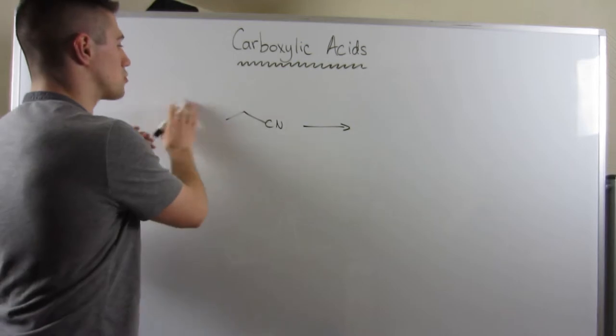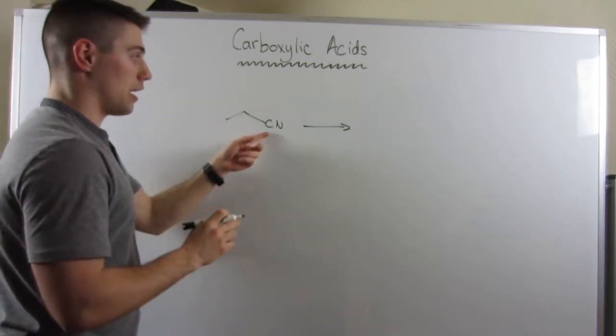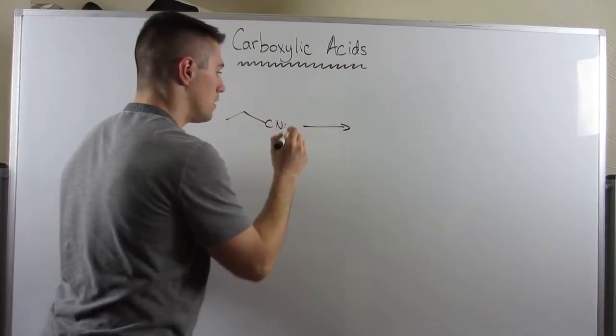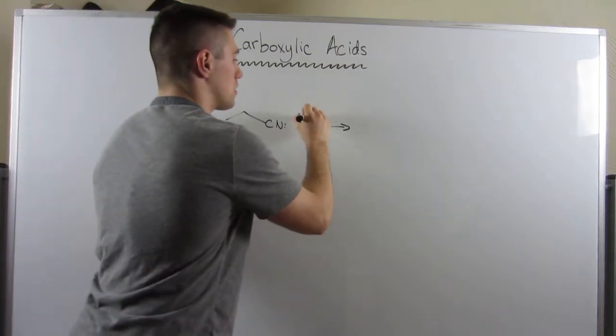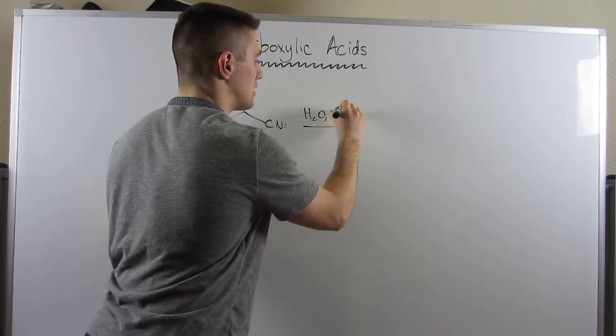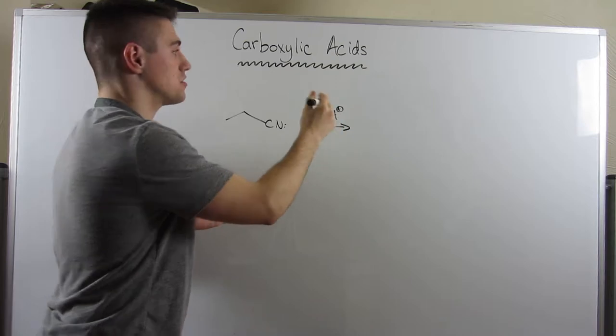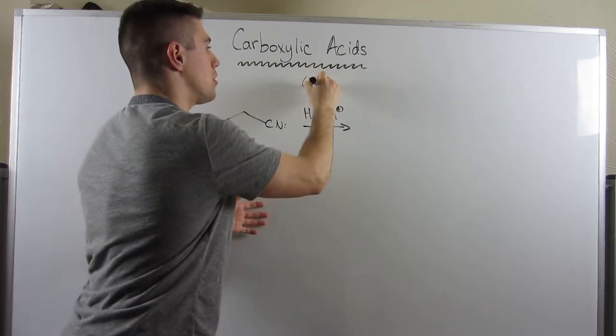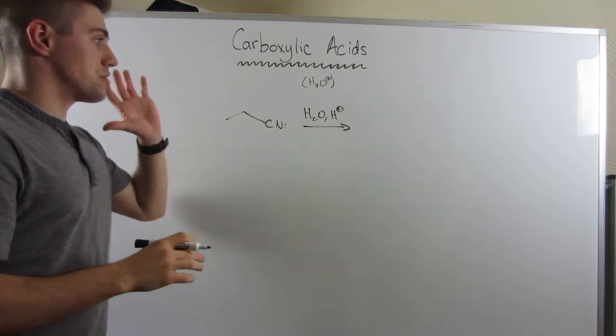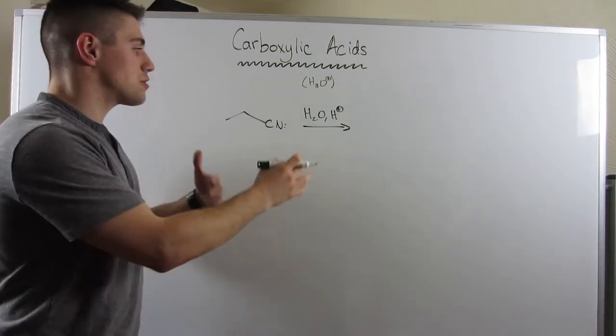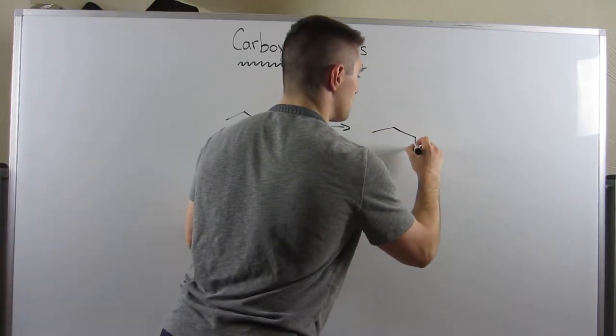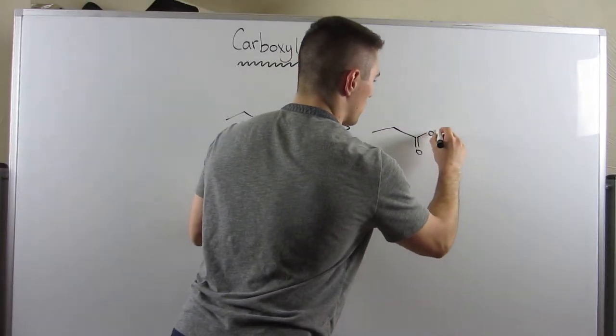So if you take a random nitrile, a random CN group that's one, two, three carbons long, and put it in the presence of acid—I'm going to write this as H2O, H+, or H3O+, or just H+, it's just in the presence of acid.